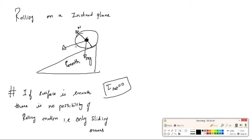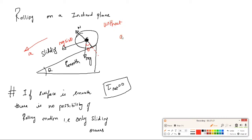For a smooth inclined surface, the acceleration is a = g·sin(theta). This is the sliding acceleration without rolling. Note this important result: without rolling (surface smooth), a = g·sin(theta). Now if the surface has friction, a ball can roll.